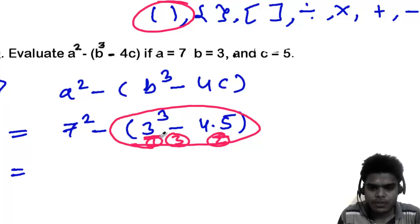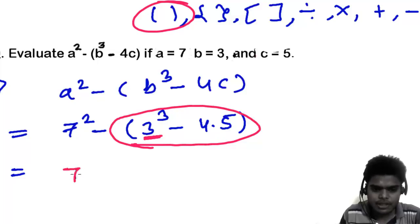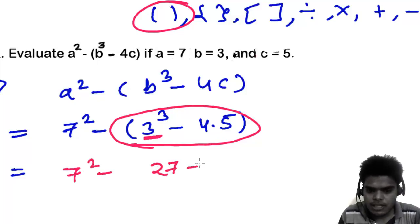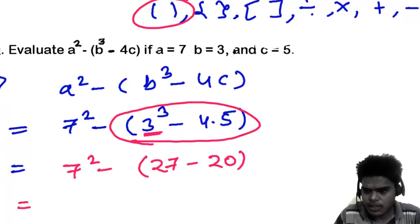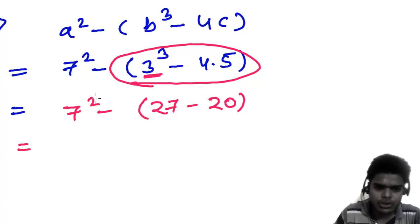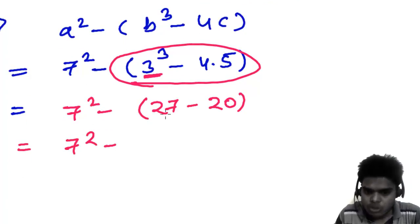So let's do one by one. It's going to be 7 squared, 3 cubed is 27, minus 4 times 5 is 20. So 7 squared. Now you can write - it's not going to affect, but still I want to write - 7 squared, and 27 minus 20 is 7.